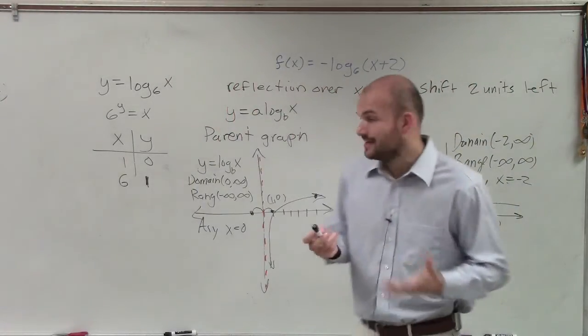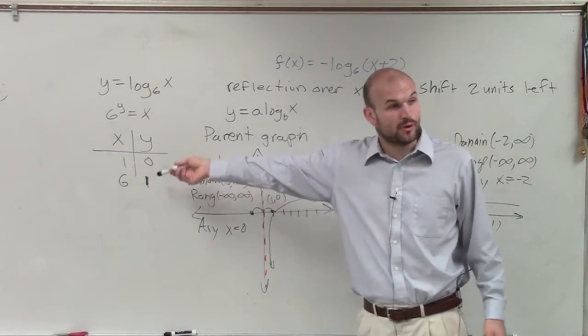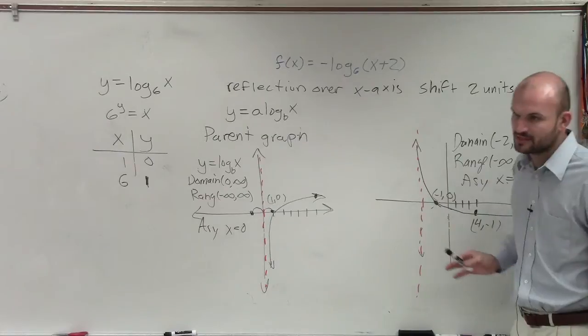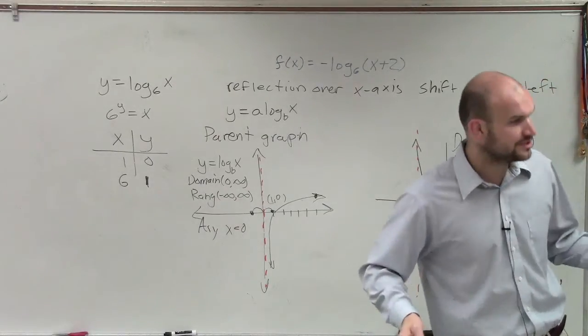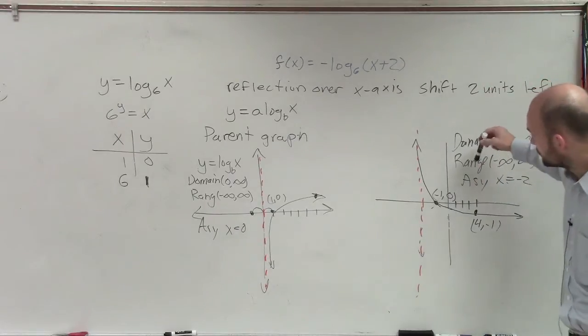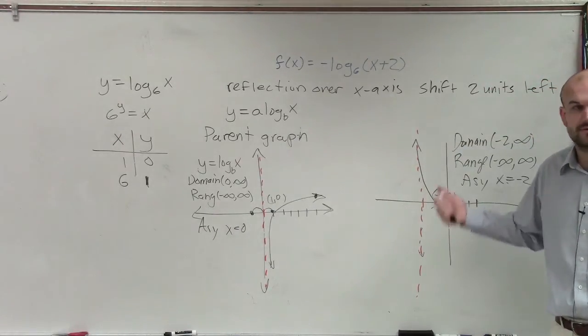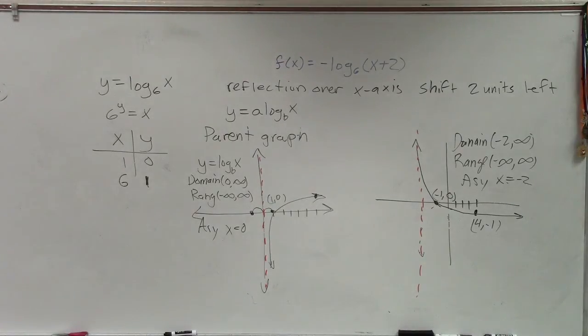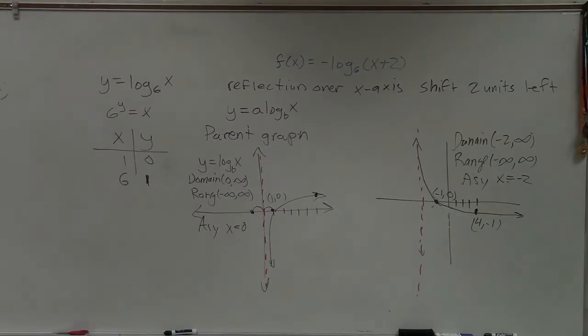OK? So when graphing, so what I did is I graphed the parent function. I found points for my parent function. And then what I did is I applied the transformations to find my two points. You can also use the table feature in your graphing calculator. I don't have a problem with that. But I do want you to provide me at least two points that are going to be on the graph. OK? And I think the easiest one is first applying the x and the y intercept from there. Make sense?